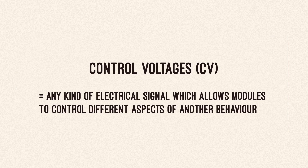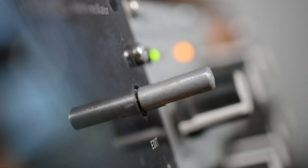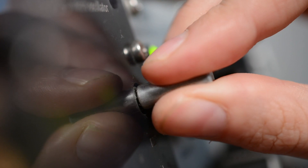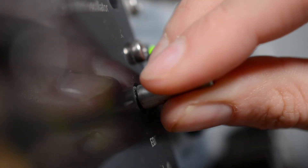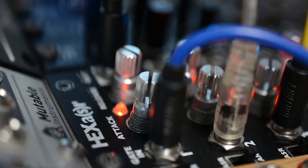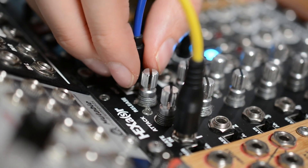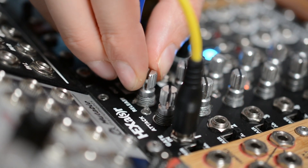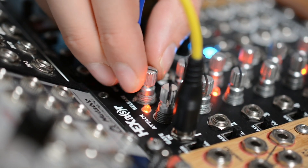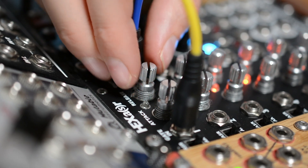Control voltages are any kind of electrical signal which allows modules to control different aspects of another module's behavior. Control voltages are for making it more interesting and fun. You have just two hands, so they can help you to make predictable changes just by turning a knob or pushing a button, and usually you can see LEDs or different light indicators to help you see the changes.